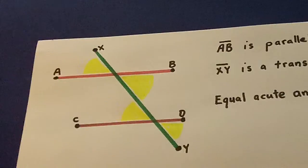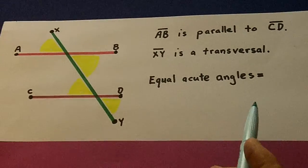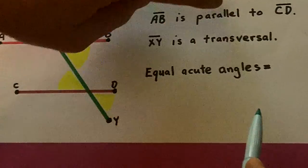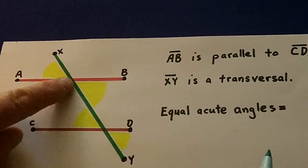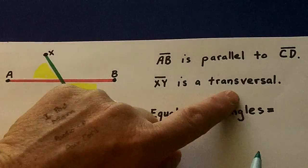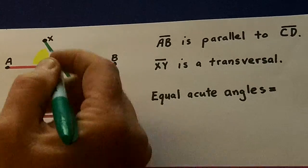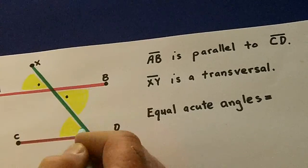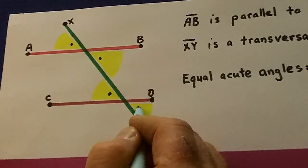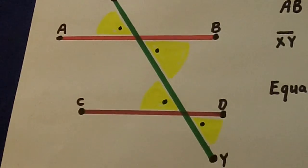And we'll go to this top one here. Now, let's see if this makes sense. AB is parallel to CD. XY, the green line, is a transversal. Now, these angles right here where you see the little yellow slices and the little green dots, those are all exactly equal.